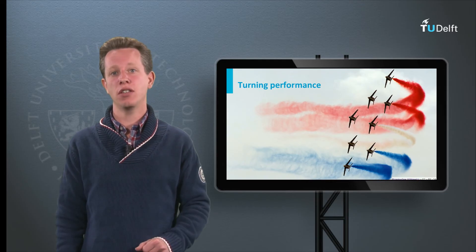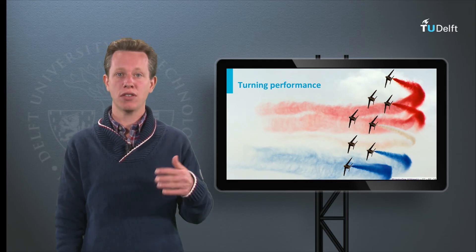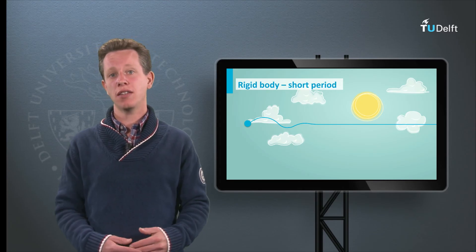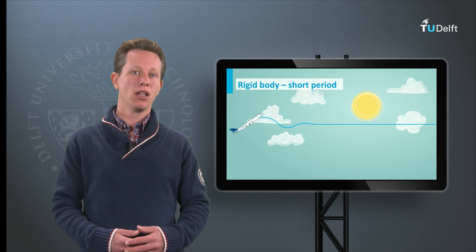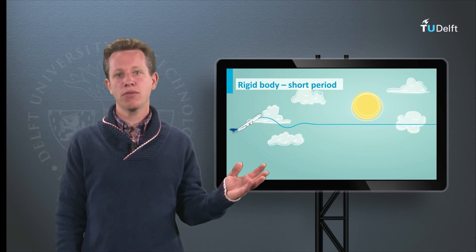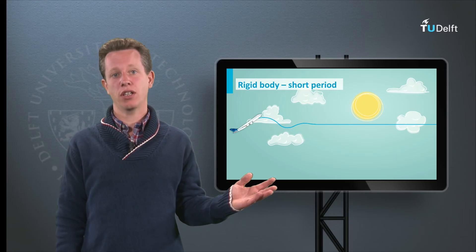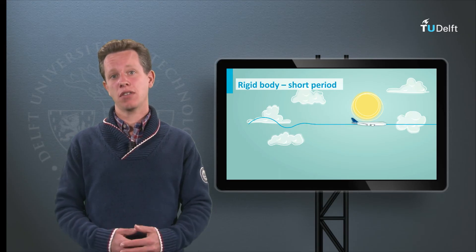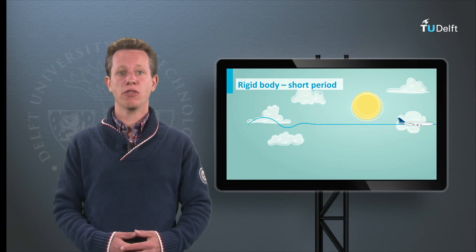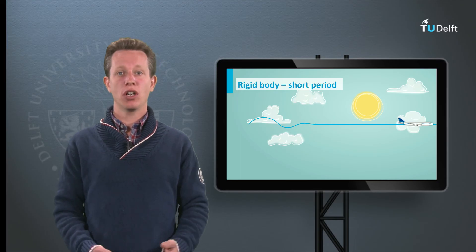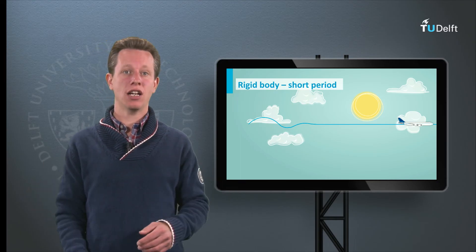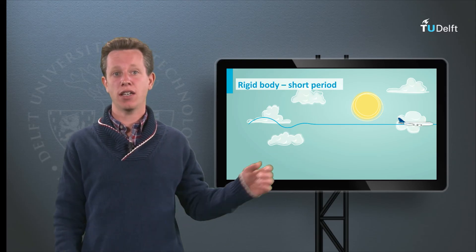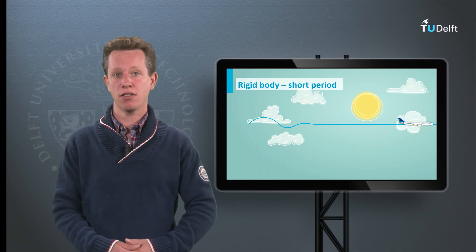If we are however interested in the motion of the aircraft around its center of gravity, we cannot make this assumption and should approximate it as a rigid body with an inertia. This representation is important for stability and control calculations — the topic of flight dynamics. The timescale considered in flight dynamics is much smaller than our aircraft performance calculations. For example, a cruise flight takes several hours and a climb several minutes, whereas the motions considered in flight dynamics are in the order of seconds.